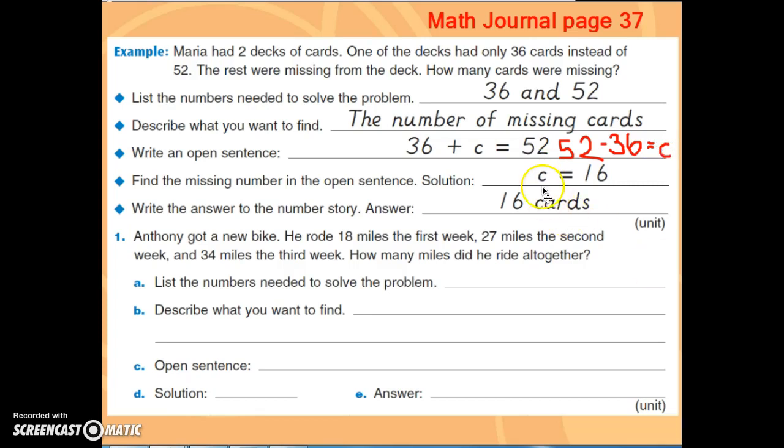Either way, we would end up getting our solution, C equals 16. Your solution will always have your variable and what it equals. And then your answer will have a label, so we're talking about 16 cards. And so we have our unit.